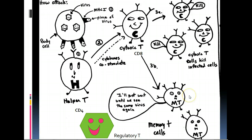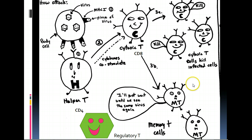These memory T cells are hanging out, and if you're attacked by the same virus, they will almost immediately go through mitosis, become cytotoxic T cells, and destroy the cells that have been infected by the virus — in many cases before you even know that you've been infected. Some people do get chicken pox twice; that can be because they didn't form enough memory T cells, or it's been such a long time since they've had it. If they do get it a second time, it's usually a much less severe case, because those memory T cells will go in, become cytotoxic T, and try to take care of the infection.